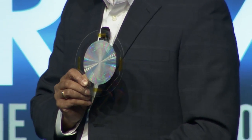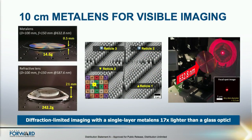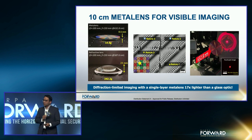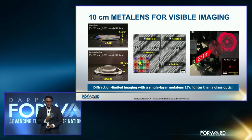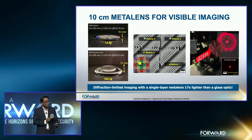An equivalent refractive lens operating at this wavelength, as you can see at the bottom left, is about 40 times thicker and about 17 times heavier. This structure is not easy to fabricate — it has about 17 billion nanostructures. The team achieved this by chopping the aperture into seven unique distinct areas that they fabricate and repeat across the aperture. That image you see in the middle is at the boundary of four of those reticles, showing 20-nanometer registration accuracy, which enables significant fabrication quality at the 10-centimeter scale.